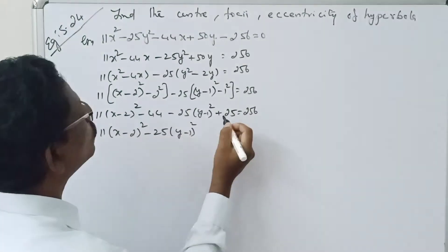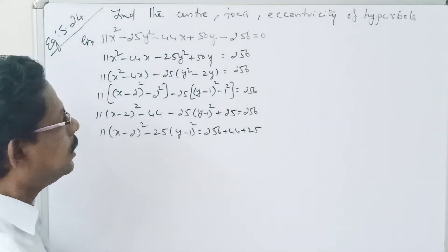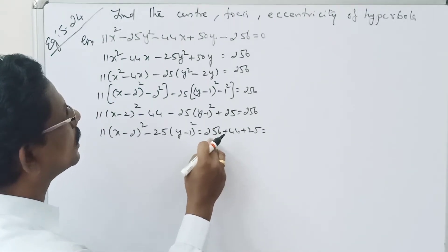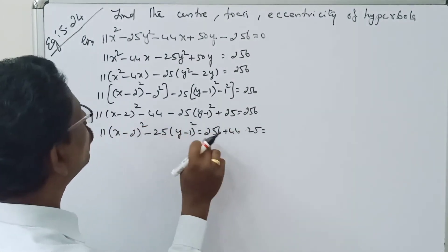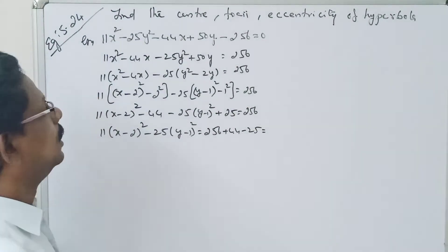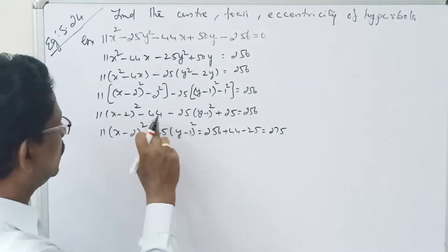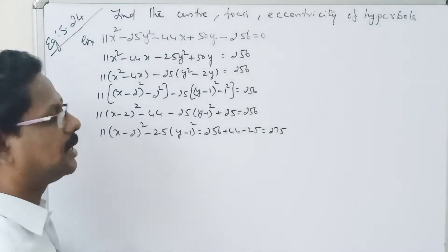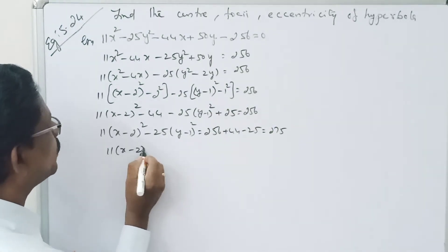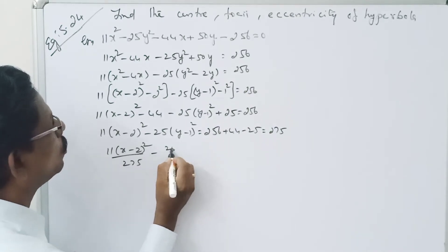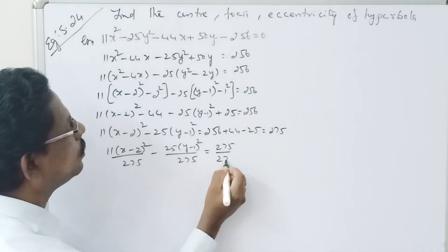Rearranging: 11(x - 2)² minus 25(y - 1)² = 256 plus 44 minus 25 = 275. Now divide everything by 275: 11(x - 2)²/275 minus 25(y - 1)²/275 = 1.